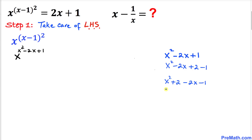Now let's simplify further: x squared plus 2, and here I can take the negative sign outside, so this becomes negative times (2x plus 1) inside the parentheses.